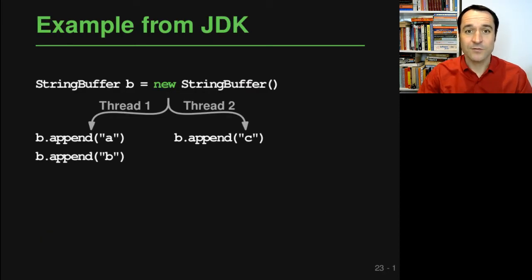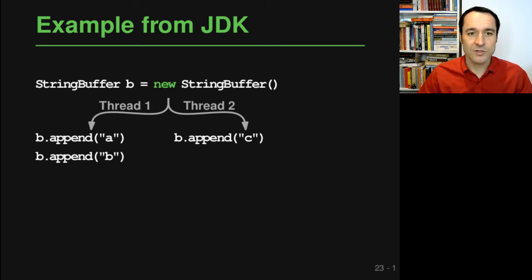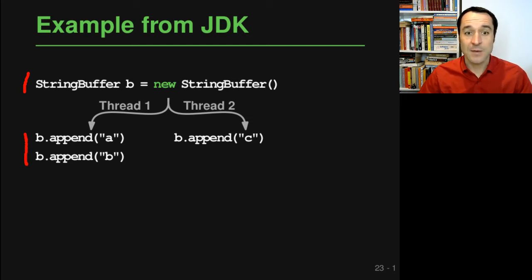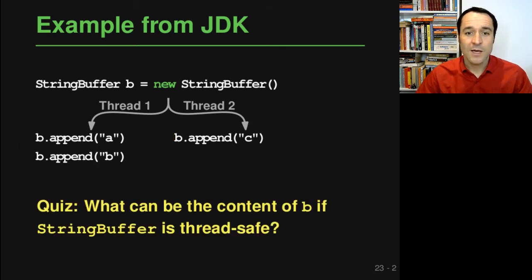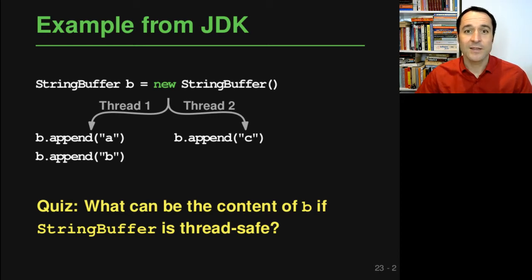Let's illustrate this idea of thread-safety with one particular class from the Java standard library that is supposed to be thread-safe, namely the StringBuffer class. In this example, a StringBuffer is initialized and then there are two threads concurrently using the same instance. One thread is appending 'a' and 'b', while the other is appending 'c'. The question is: what would be the possible contents of the StringBuffer, assuming StringBuffer is indeed a thread-safe class? I invite you to stop the video here for a few seconds and think about it.